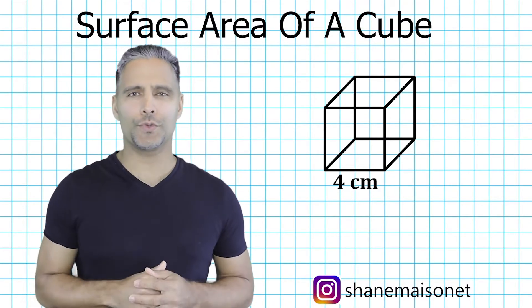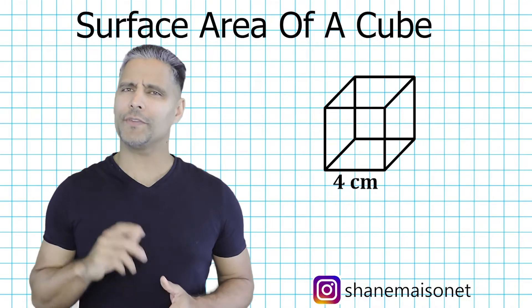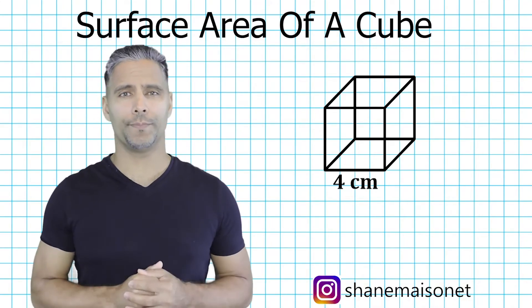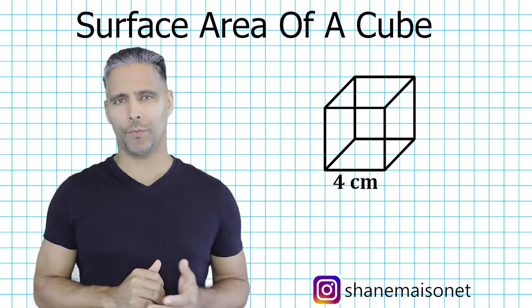Hey, this is Mr. Masonette, and in this tutorial what we're going to do is cover how to find the surface area of any cube. This specific cube has an edge length of 4 centimeters.